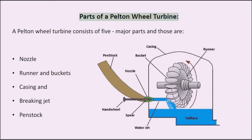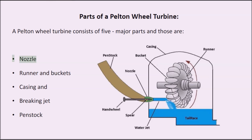Parts of a Pelton wheel turbine: A Pelton wheel turbine consists of five major parts — nozzle, runner and buckets, casing, braking jet, and penstock.